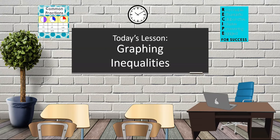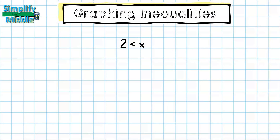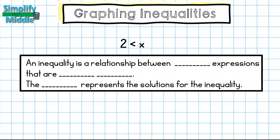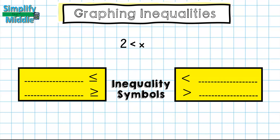Hi and welcome to today's lesson: graphing inequalities. Today we're going to look at an inequality like 2 is less than x. First, let's define what an inequality is — an inequality is a relationship between two expressions that are not equal. We are going to see this on the number line, and we are going to see some shading. The shading represents the solutions for the inequality.